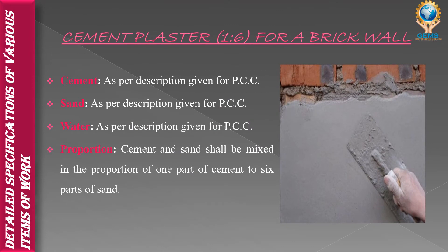The next topic is cement plaster for a brick wall. The materials used are cement, sand, and water. Cement plaster uses a proportion of 1:6 — one part cement and six parts sand. The cement and sand used shall be the same as specified for PCC (plain cement concrete). The proportion of cement to sand shall be mixed as one pot of cement to six pots of sand. Cement plastering of a brick wall means applying a cement paste — a mixture of cement, sand, and water — on the brick wall.